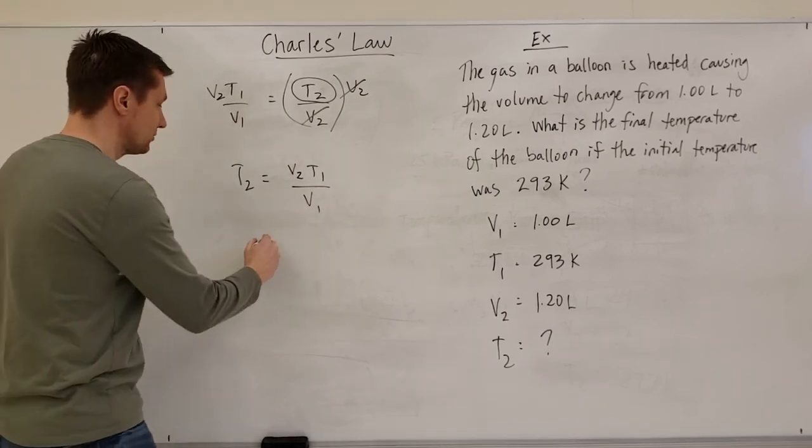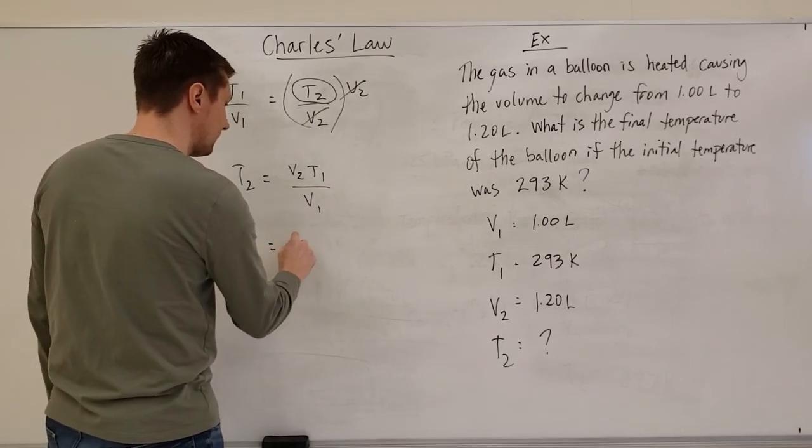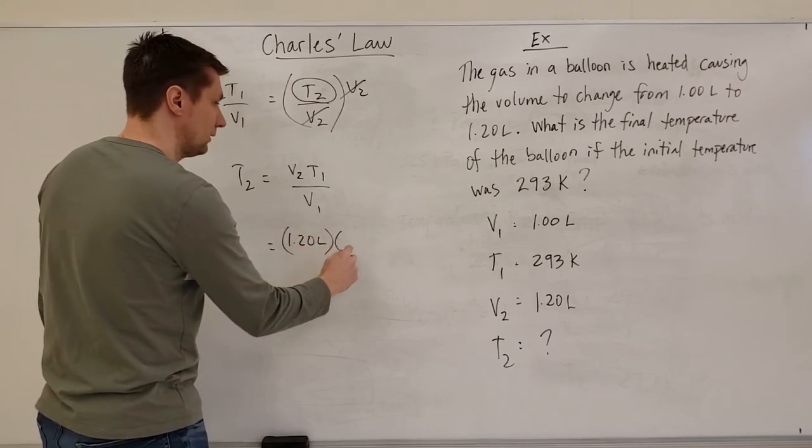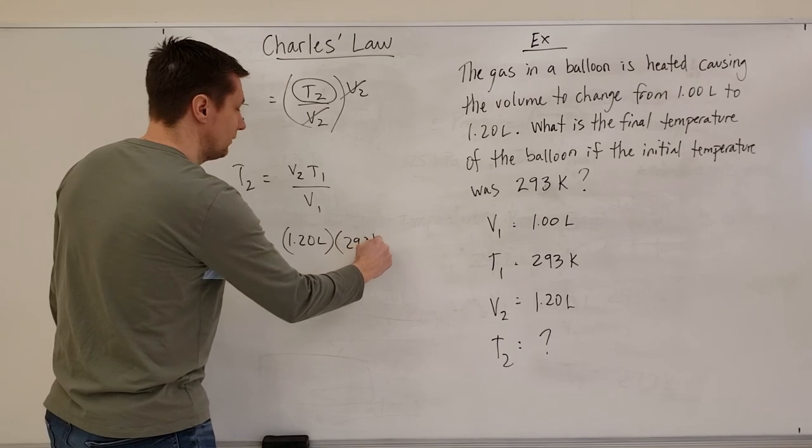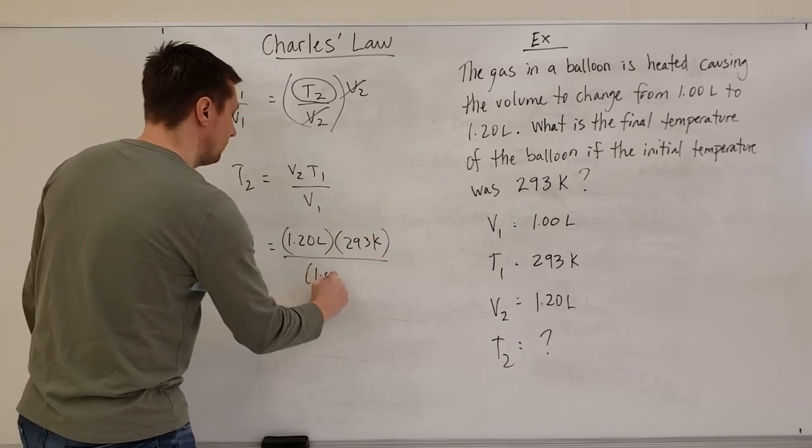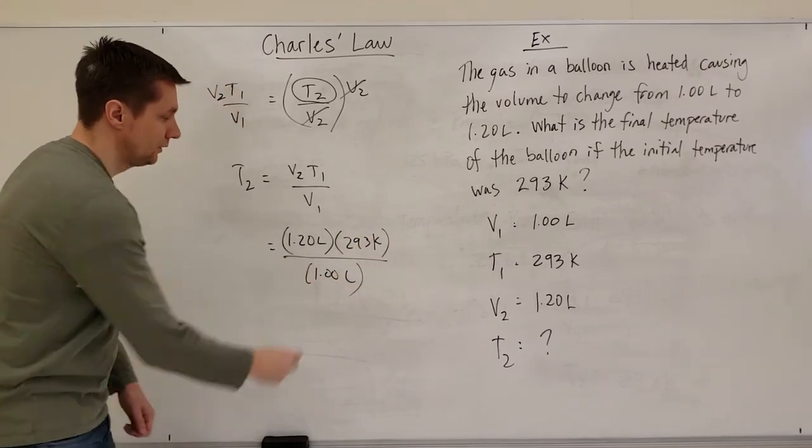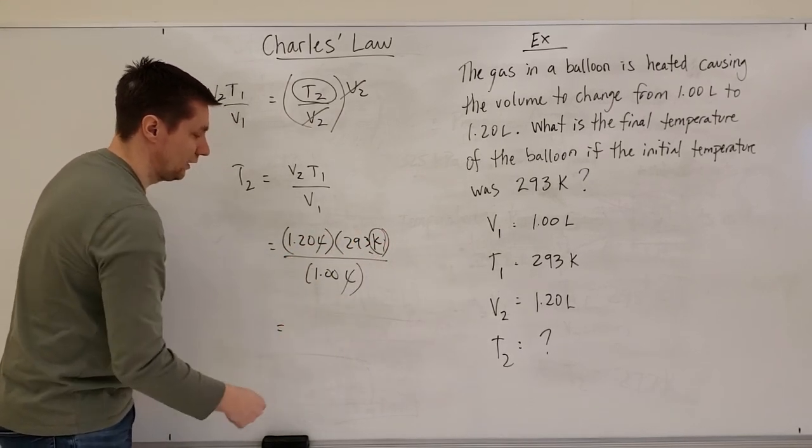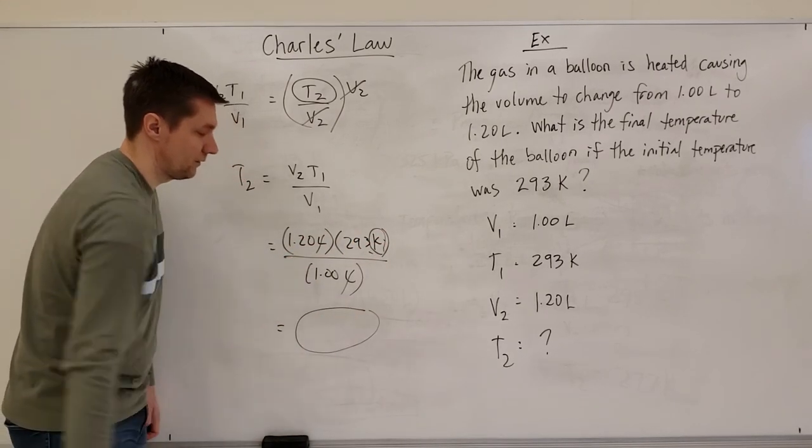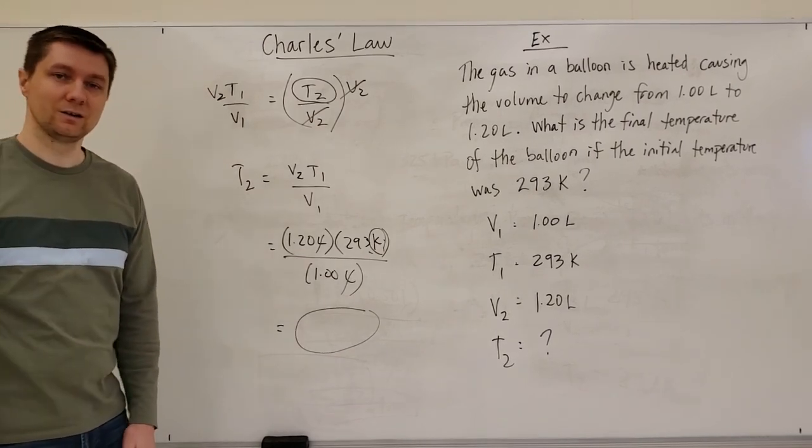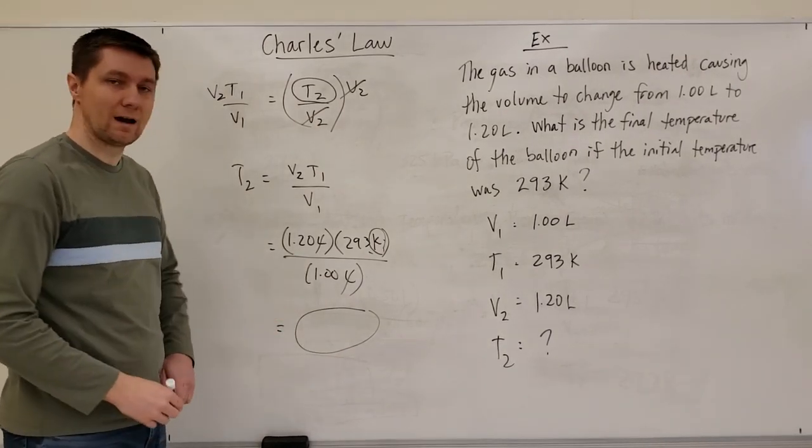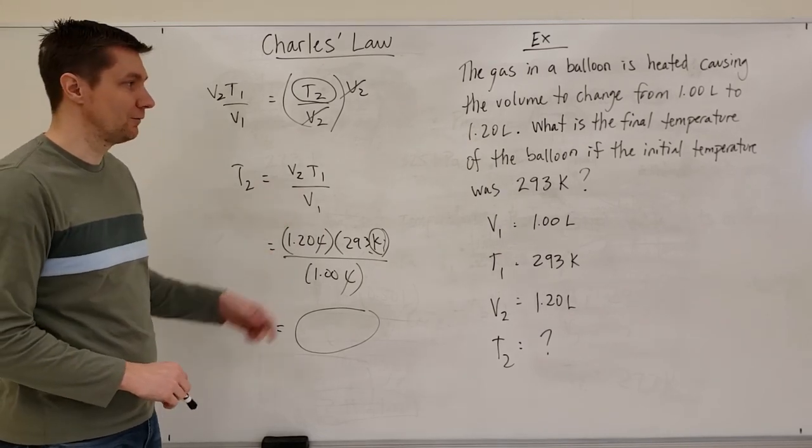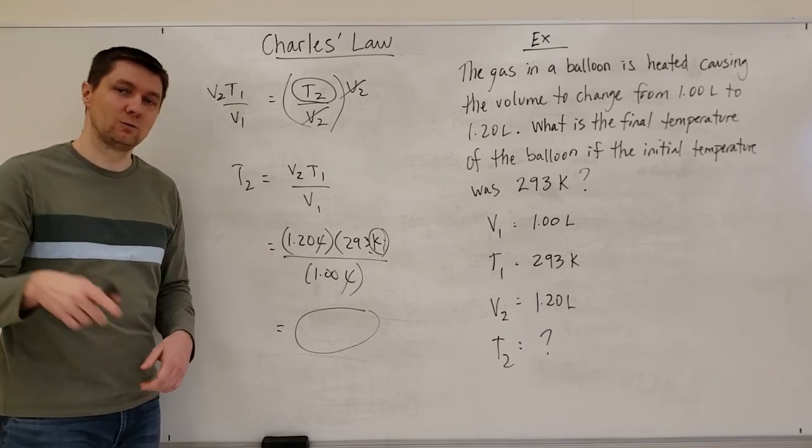Then I can plug my numbers in. V2 is 1.20 liters times 293 Kelvin divided by 1.00 liters. You can see that my liters cancel, I'm left with units of Kelvin and I get my answer. Go ahead and plug that into your calculator and make sure that you round to the correct number of significant digits. Thanks for being with me in this one guys and we'll see you in the next video.